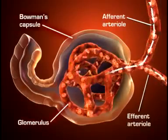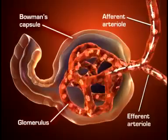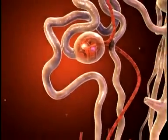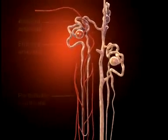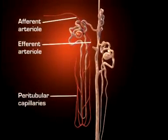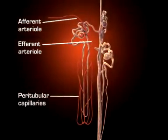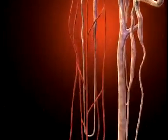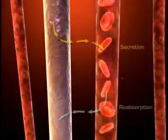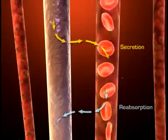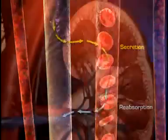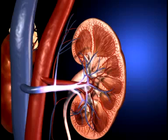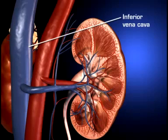The afferent and efferent arterioles regulate glomerular capillary pressure by selectively dilating or constricting. The kidney's venous blood, now filtered, flows from the glomerulus via the efferent arterioles into the peritubular capillary network, a low-pressure reabsorptive system surrounding all portions of the tubules. This arrangement permits rapid movement of solutes and water between the fluid in the tubular lumen and the blood in the capillaries. The peritubular capillaries rejoin to form the venous channels by which blood leaves the kidneys and empties into the inferior vena cava.